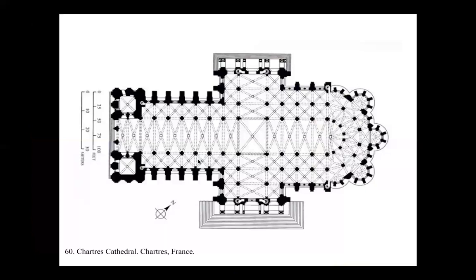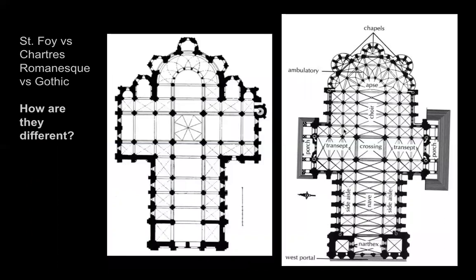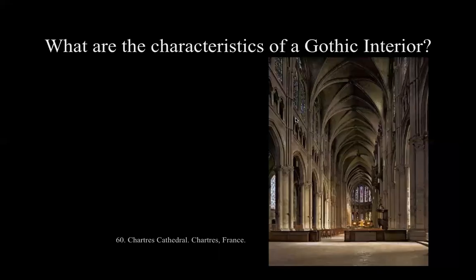Here is the floor plan for Chartres. The central nave is divided into 12, and there's numerical harmony with division into threes. It's much more open compared to a Romanesque church — less chunky, especially in the ambulatory and apse end with a lot less masonry. Here is the interior image for a Gothic church — the interior of Chartres. What are the characteristics? There will be similarities to Romanesque, but we're looking for variations.